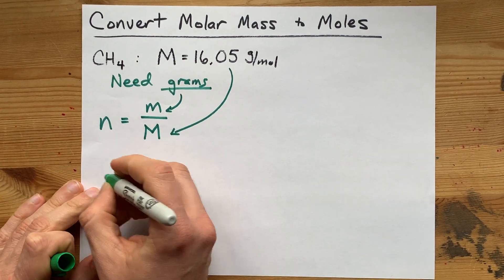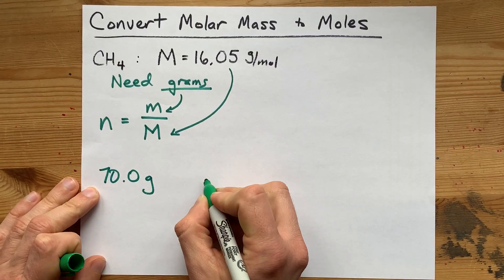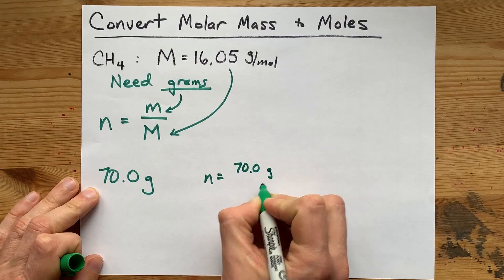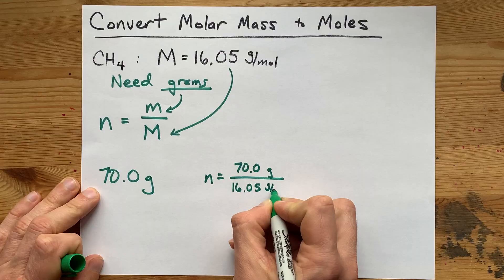For example, if we had 70 grams, then the number of moles would be that 70 divided by 16.05 grams per mole.